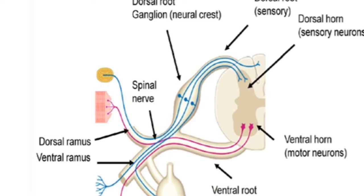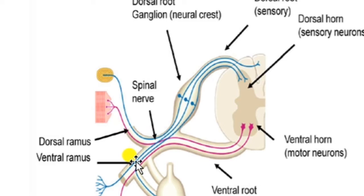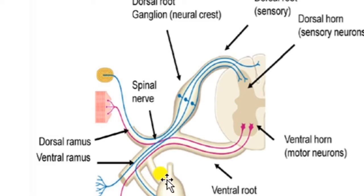After emerging from the intervertebral foramina, the spinal nerve is divided into three branches called rami. The branch on the dorsal side is the dorsal ramus, the one towards the ventral side is the ventral ramus, and a third branch called the ramus communicans ends in the sympathetic ganglion.